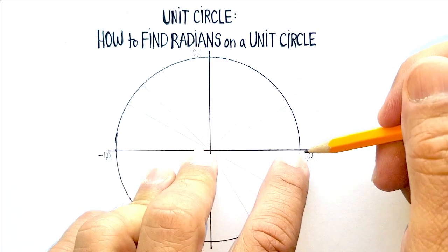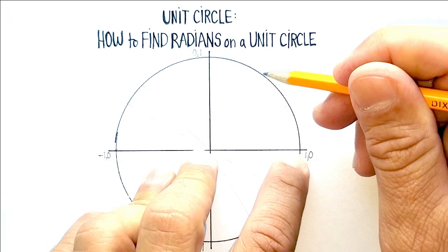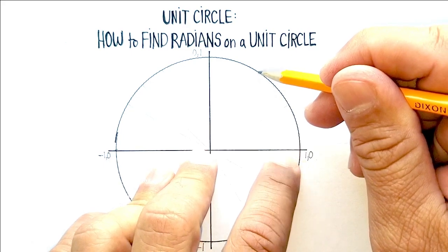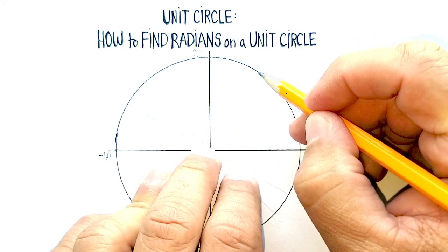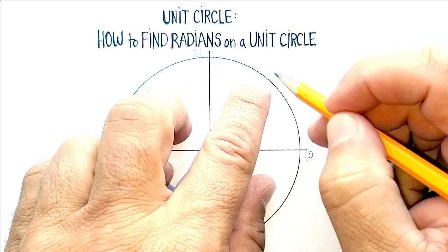The first radius would get all the way to just about here. Not quite to where I marked this line, but just about to right here. So that would be like one radius or radian.